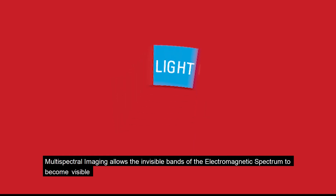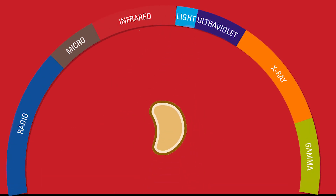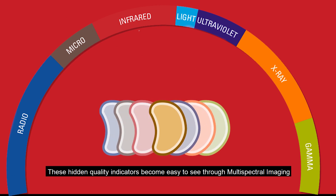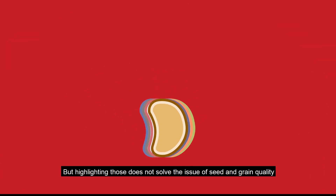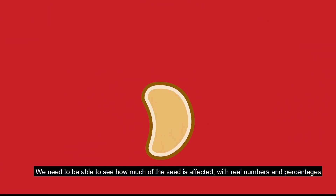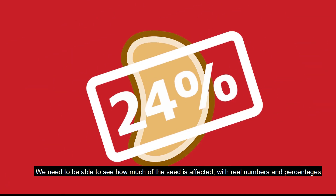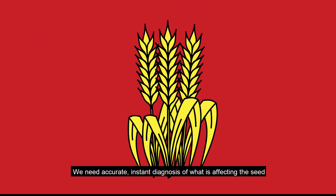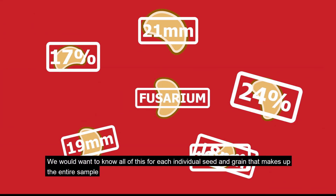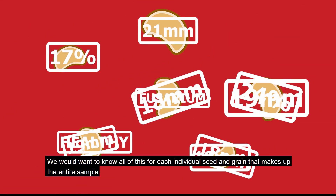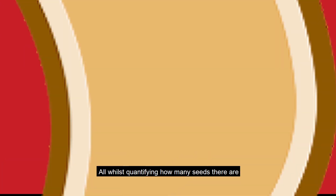The answer? Multispectral imaging. Multispectral imaging allows the invisible bands of the electromagnetic spectrum to become visible. These hidden quality indicators become easy to see through multispectral imaging, but highlighting those does not solve the issue of seed and grain quality. We need to be able to see how much of the seed is affected with real numbers and percentages — accurate, instant diagnosis of what is affecting the seed, and ideally for each individual seed and grain that makes up the entire sample.